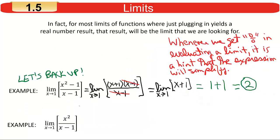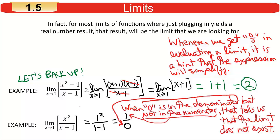Here's another one: the limit of x squared over the quantity (x minus 1) as x approaches 1. Try plugging in 1 — this time you get 1 over 0. Having a zero in the denominator is always a problem. Before, if it was 0 over 0, it flagged the expression as simplifiable. But if it's something else over 0 — not 0 over 0 — that's an indication that the limit does not exist. We'll use DNE to indicate that the limit does not exist.